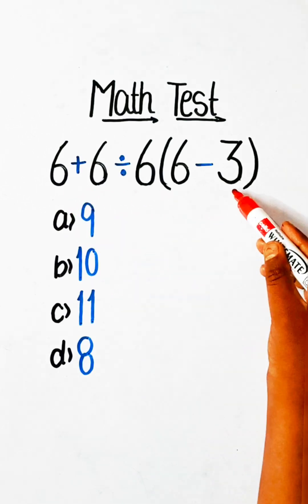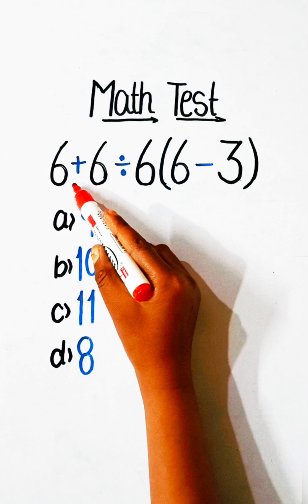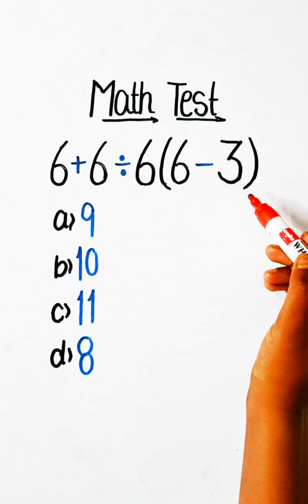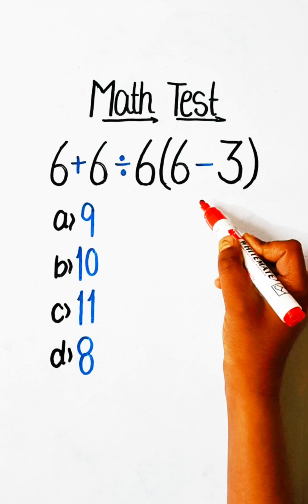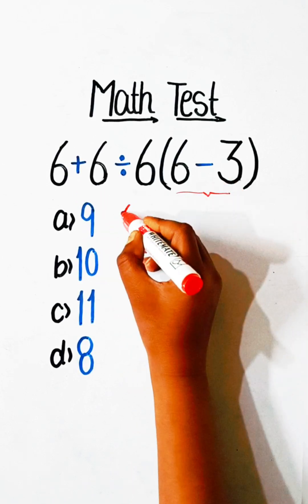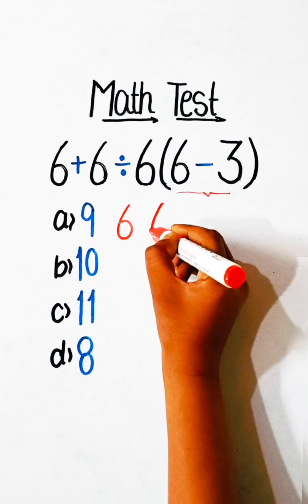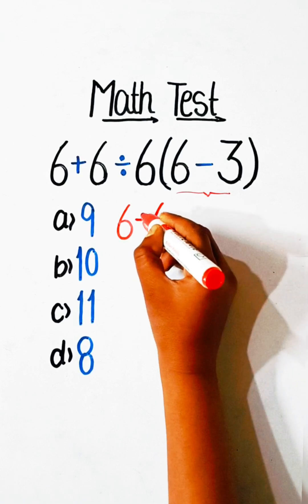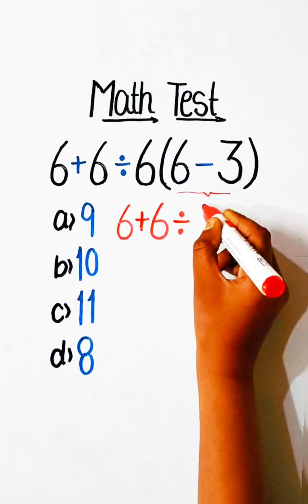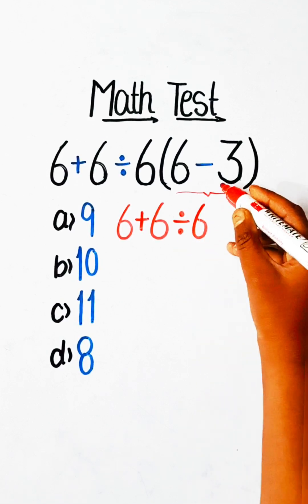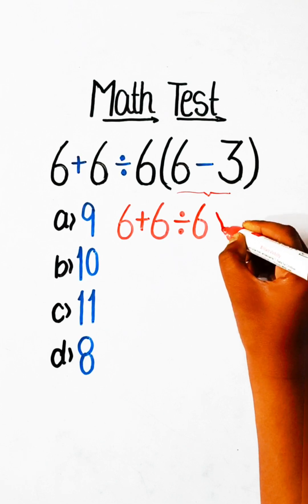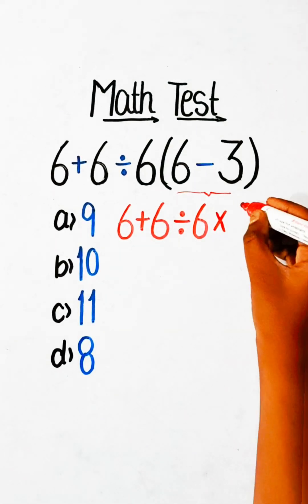So, let's solve this. Here we have plus, division, and bracket part. So we will do first bracket part. We will write here 6 plus 6 divide by 6. 6 minus 3 is 3. Here we have 3.